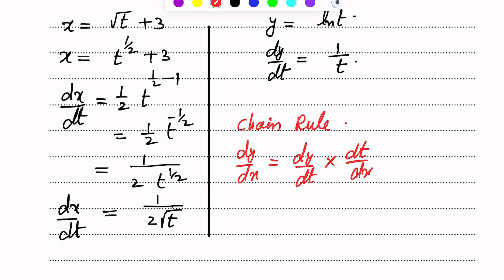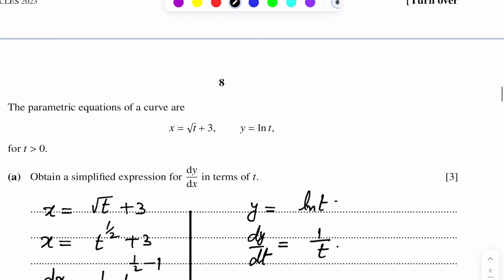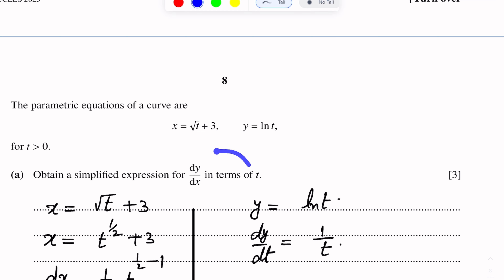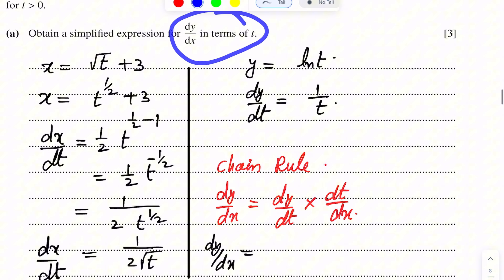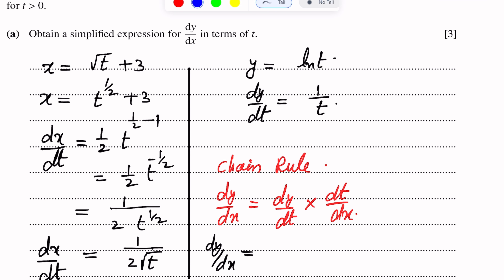Now we find dy over dt. y equals log t. Differentiating with respect to t, we get dy over dt equals 1 over t.